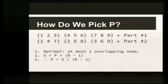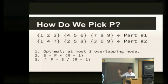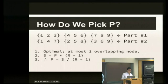How do we actually pick P? For us to have a perfect set of sets, we want at most one overlapping node. For instance, it does us no good to have a set that's {1,2,3} and a set that's {1,2,4} — we'd much rather not have two nodes in common. The number of sets that one node appears in is P — the number of permutations we've picked. The scatter width is P times R minus one. In this case it's two times two, which is four. So you just solve for P: P equals S divided by (R minus one). That's how you get P.